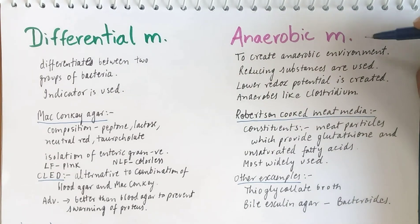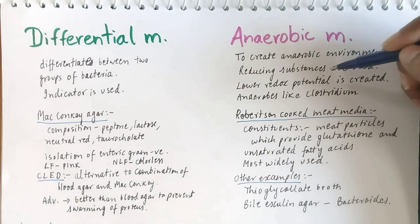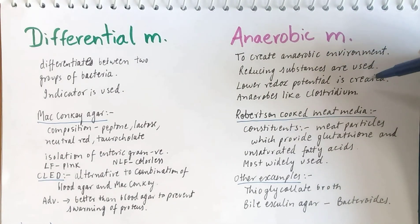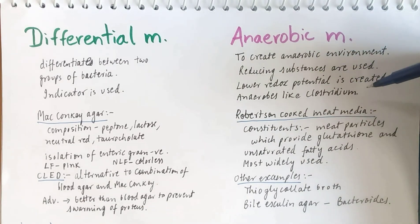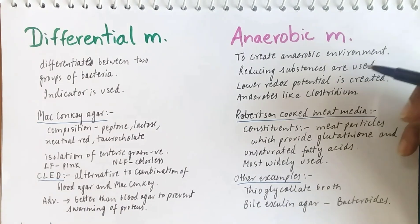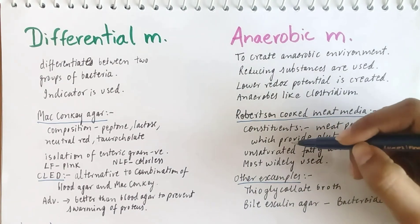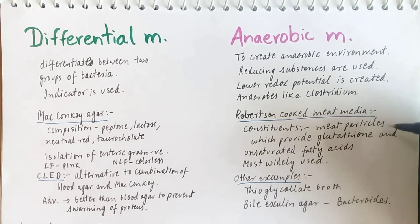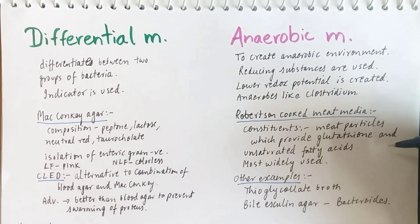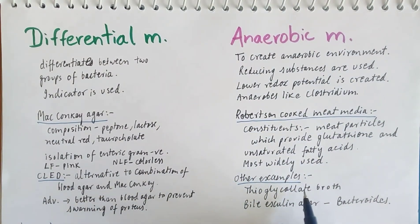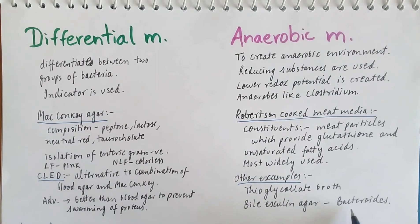Moving on to anaerobic media — certain substances are used to create a lower redox potential, which is used for the growth of anaerobes like Clostridium. One example is Robertson's cooked meat medium, which is the most widely used anaerobic media. In this, meat particles are used which contain glutathione, a reducing substance, and unsaturated fatty acids. Other examples are thioglycollate broth and bile esculin agar for the isolation of Bacteroides.